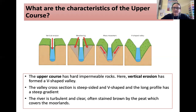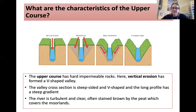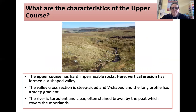Going back to look at the upper course: this is the formation of a V-shaped valley. You can see those important processes of vertical erosion, weathering, and mass movement forming this V-shaped valley. In the upper course, there are hard impermeable rocks, and vertical erosion has formed a V-shaped valley. The valley cross section is steep-sided and V-shaped, and the long profile has a steep gradient. The river is turbulent and clear, often stained brown by the peat which covers the moorlands — you can see this very near to the source at Crossfell, up on the Pennines.